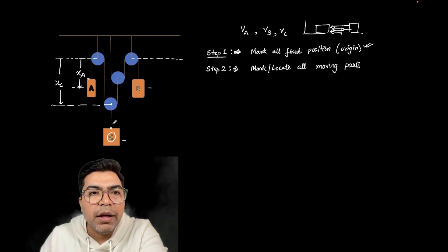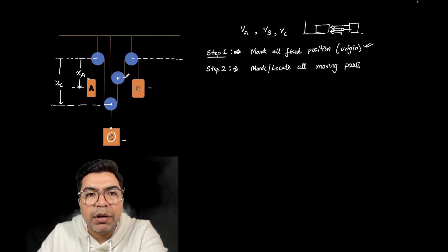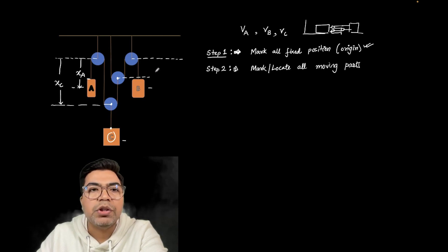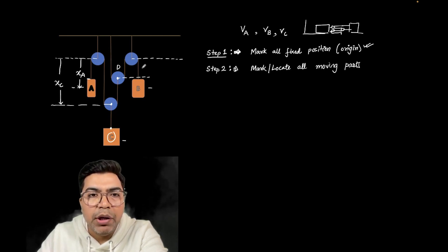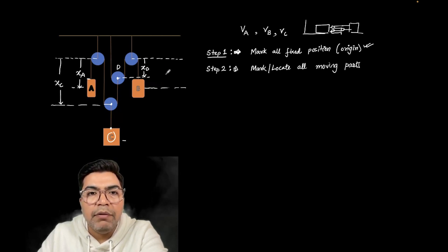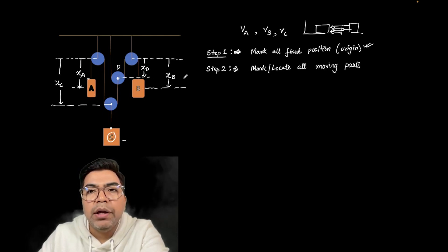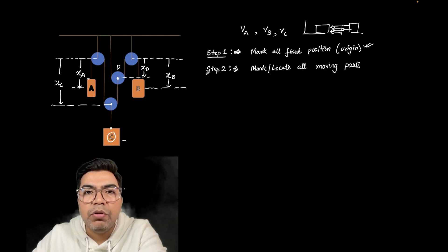So this is the position of C. Now we have to mark the position. So here, in the second case, this is a fixed position — let's mark this. So we'll call this as D pulley, and I will mark this as D. I am marking this position as a fixed position or moving position. And this B, I will mark as XB. So these are four moving parts: A, B, C, and this D pulley. And we mark and locate all moving parts. So this is also done.